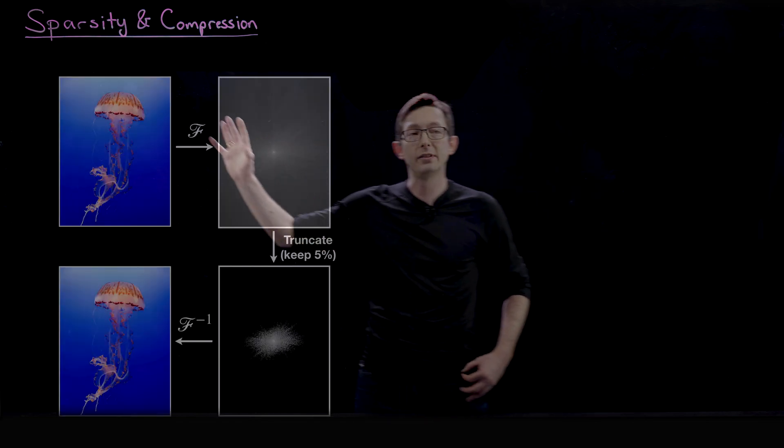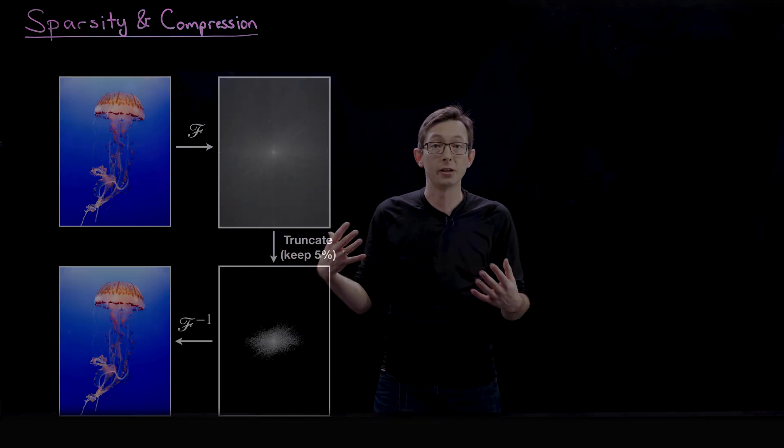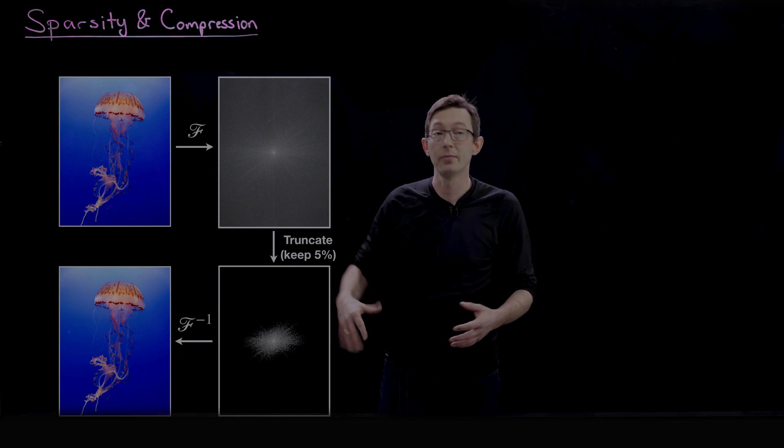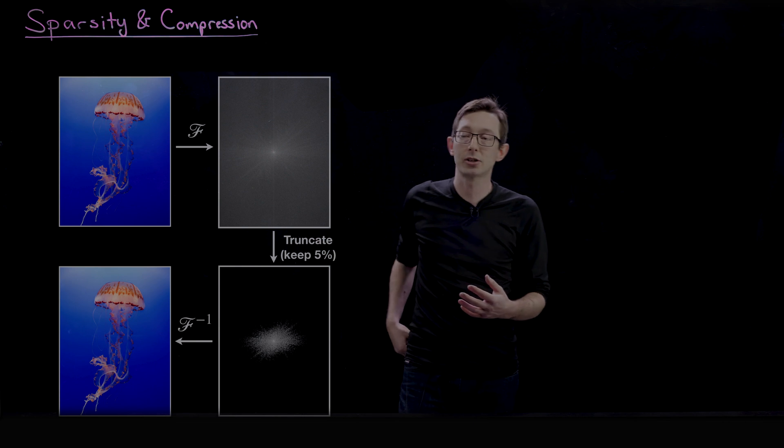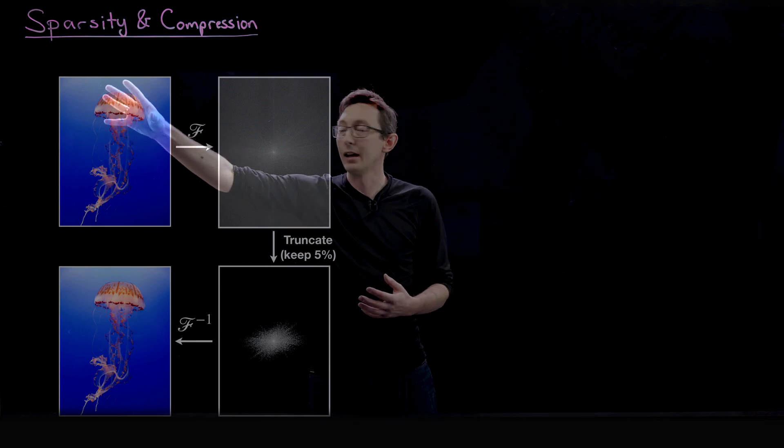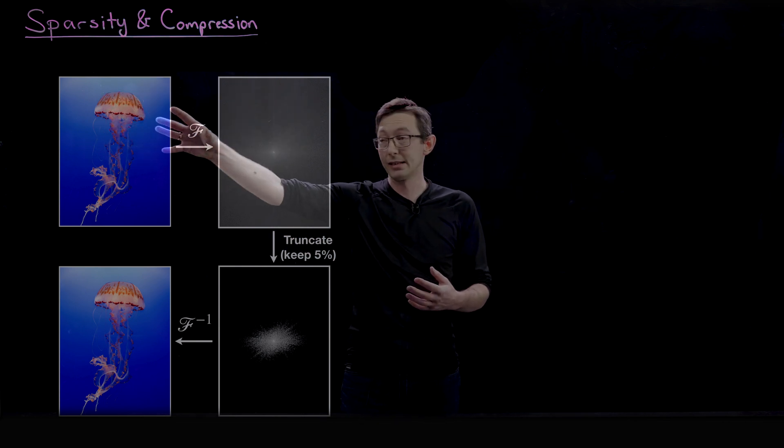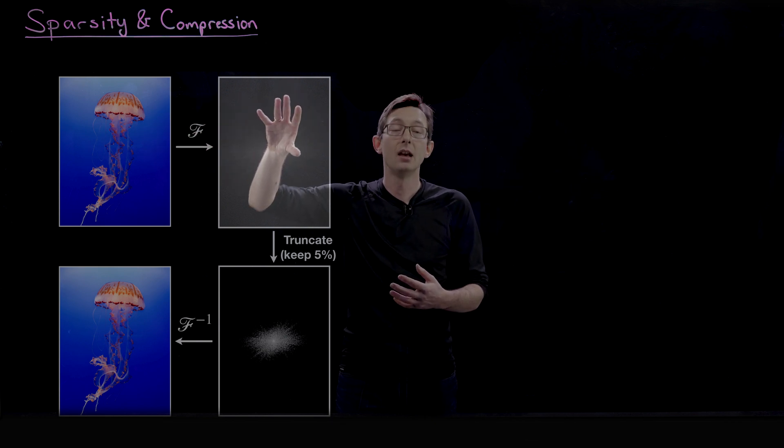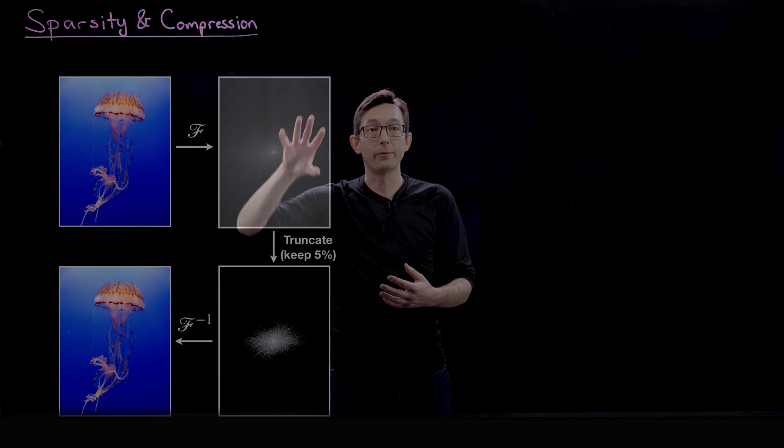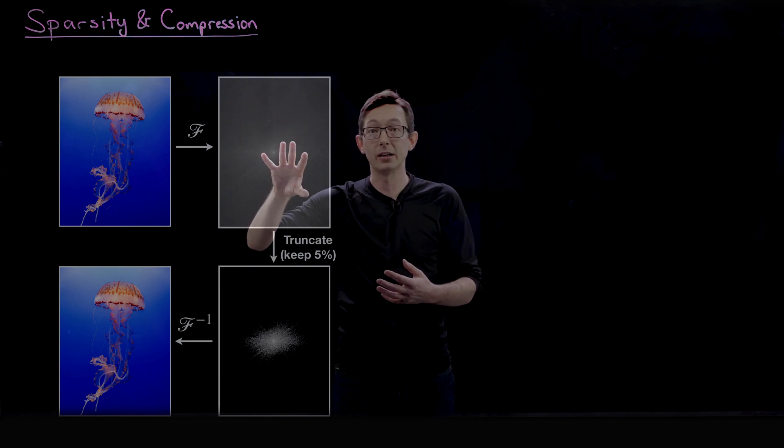So we've already seen this diagram of how compression in general works, image compression. You start with a high resolution image, in this case of this jellyfish. And in some transformed basis, in this case the fast Fourier transform or wavelet basis, most of the Fourier coefficients are very, very small.